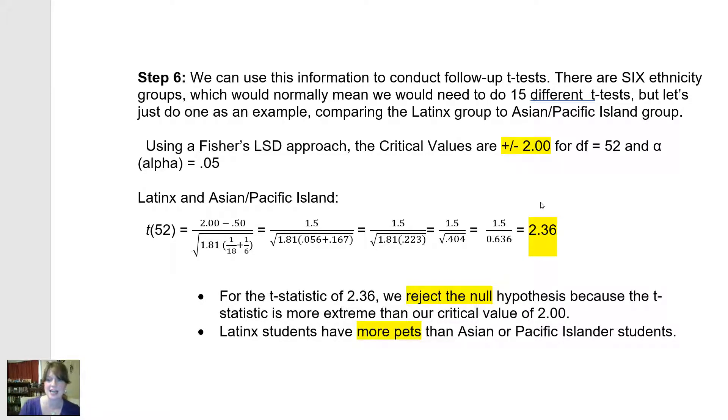Then ultimately, my statistic, my inferential t-statistic, is 1.5 over 0.636 of 2.36. That is my t-statistic. It's bigger than my critical value of 2, so I'm going to reject the null hypothesis. It looks as though Latinx students at Pierce have more pets on average than Asian or Pacific Islander students. At least in my data, these findings are statistically significant.